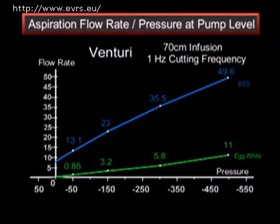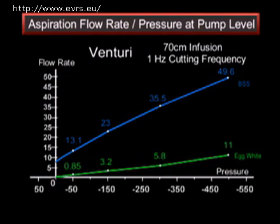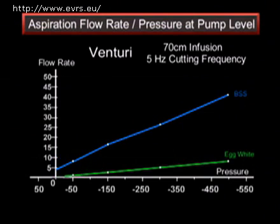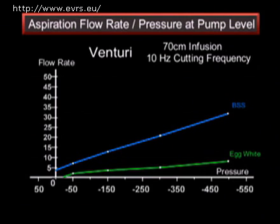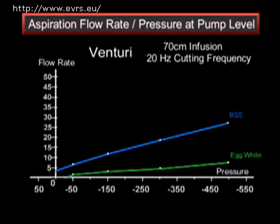Bidet and Colin have confirmed these theories. With a venturi pump at 1 Hz, or 60 cuts a minute, one has 15 times the amount of flow in BSS than in egg white for a depression of minus 50 mmHg, seven times for minus 150, and six times for minus 300. These enormous differences are equally found at 5 Hz (300 cuts a minute), 10 Hz (600 cuts a minute), and 20 Hz (1,200 cuts per minute).